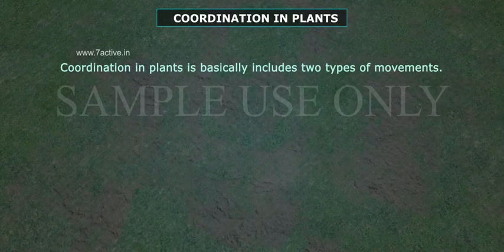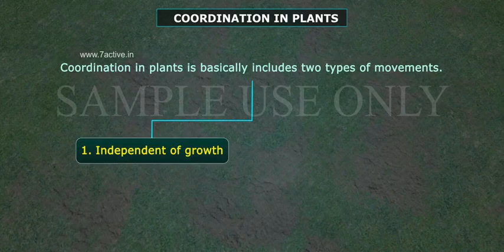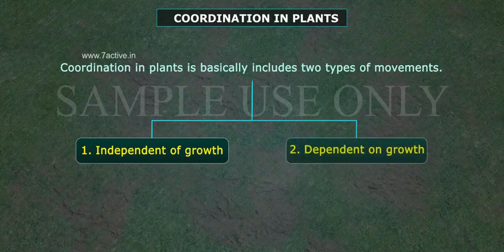Coordination in plants basically includes two types of movements: 1. Independent of growth, and 2. Dependent on growth.